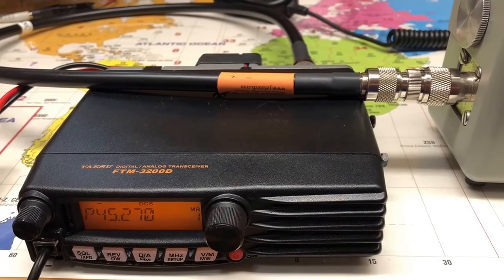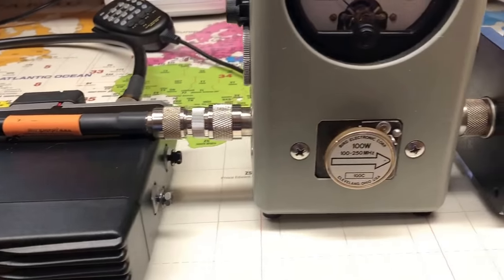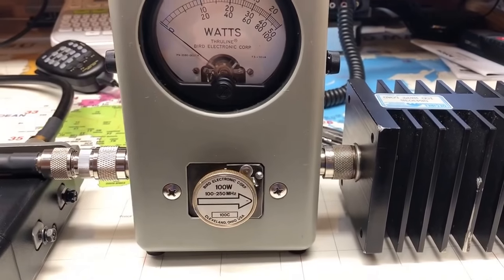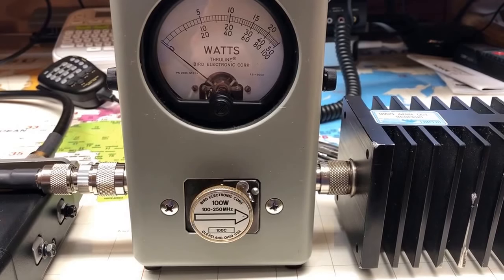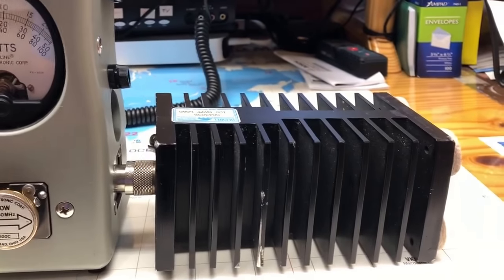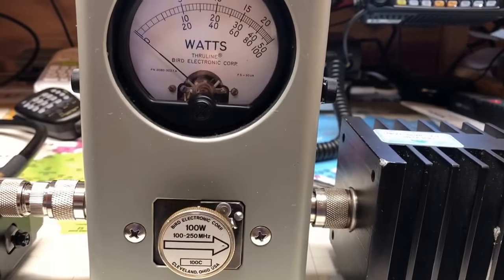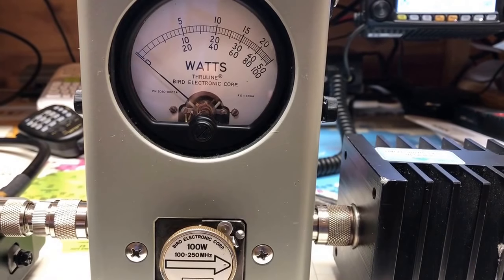You can see in the picture it just loops around through a jumper, a couple of adapters that are needed because it's UHF to N connector, and then into a dummy load. 100 watt slug and you'll see what it does while I transmit here.